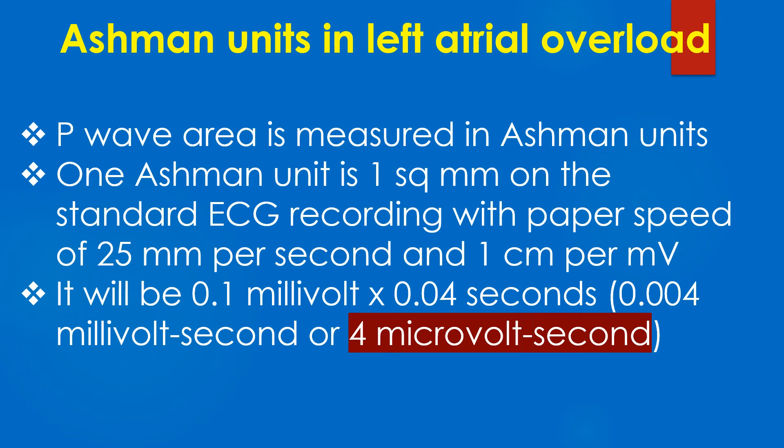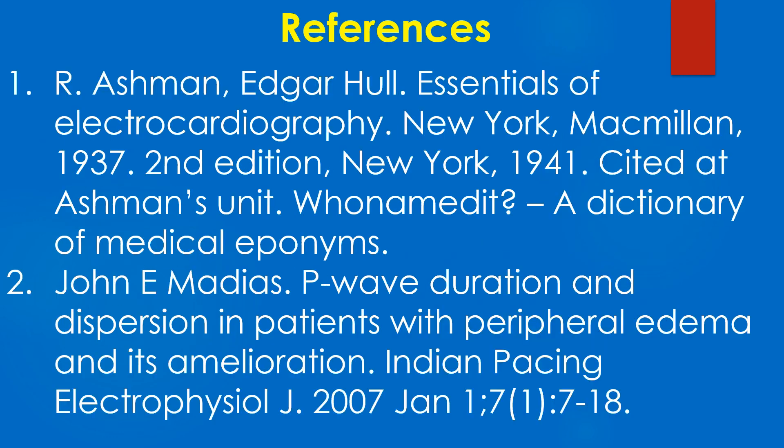P wave area is measured in Ashman units. One Ashman unit is 1 square mm on the standard ECG recording with a paper speed of 25 mm per second and 1 cm per millivolt — equivalent to 0.1 millivolt multiplied by 0.04 seconds, or 0.004 millivolt-seconds, or 4 microvolt-seconds. Here are a couple of references on the Ashman unit.